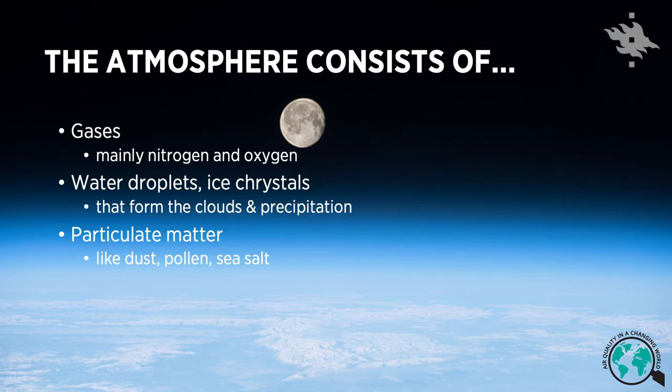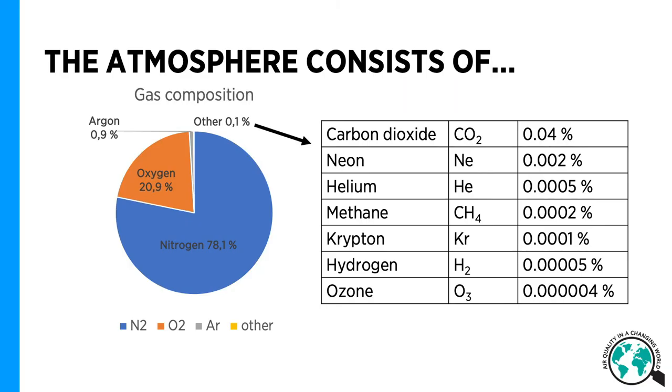The atmosphere consists of gases, mainly nitrogen and oxygen. It consists of water droplets and ice crystals that form clouds and precipitation. And it also carries particulate matter like dust, pollen, or sea salt. Here is the figure of the atmospheric gas composition.